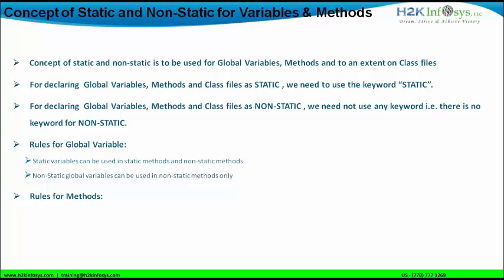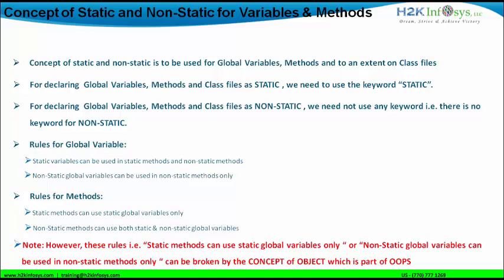We also have rules for methods. If a method is static, it can use only static global variables — that's a stringent rule. Similarly, if a method is non-static, it can use both static and non-static global variables. These stringent rules — that static methods can use static global variables only, or non-static global variables can be used in non-static methods only — can be broken. That is where the concept of objects comes in, which is part of object-oriented programming and will be taken up later.